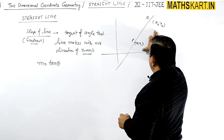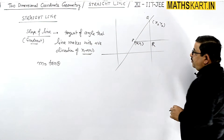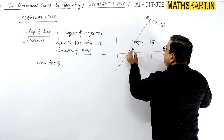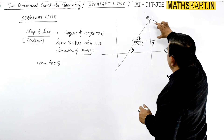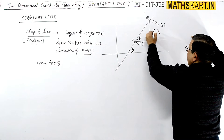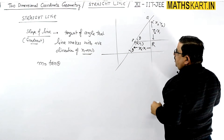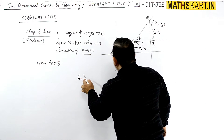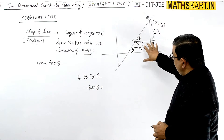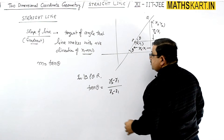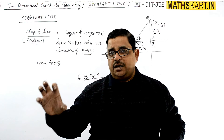Now if two points are given, how do we calculate slope? Drop a perpendicular from Q to form a right triangle PQR at point R. The line makes angle θ, and by corresponding angles this same θ appears in the triangle. The vertical side is y2 − y1 and the horizontal side is x2 − x1. So in triangle PQR, tan(θ) = perpendicular/base = (y2 − y1)/(x2 − x1). This is the two-point formula for the slope of a line.